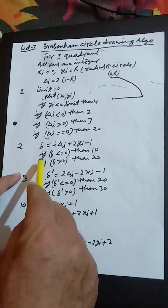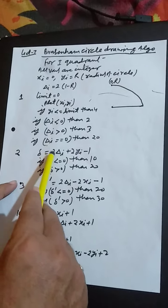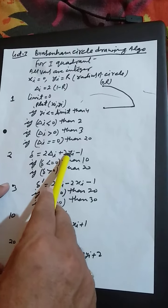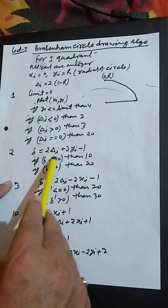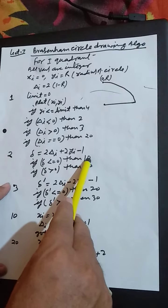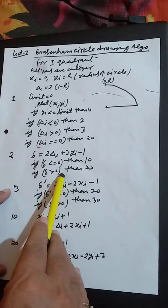On step 2, we have to do small delta is equal to 2 delta i plus 2yi minus 1. If delta less than or equal to 0, then 10. If delta greater than 0, then 20.